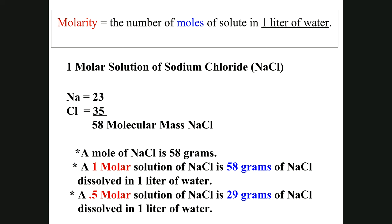A 0.5-molar solution is weaker — that's 29 grams (half of 58) in one liter of water. A two-molar solution of sodium chloride would be 116 grams in one liter of water — more concentrated, more salty. Molarity isn't that complicated once you understand the concept.